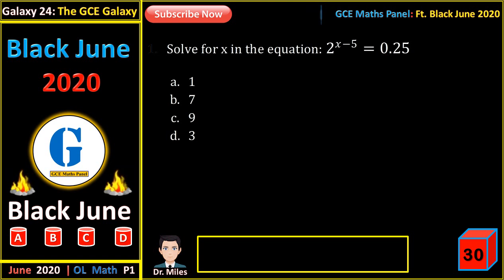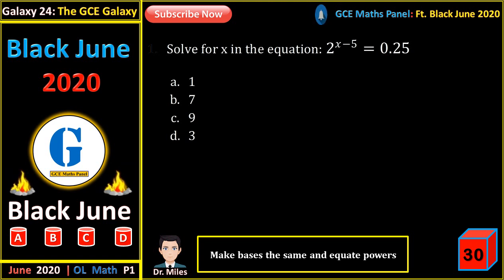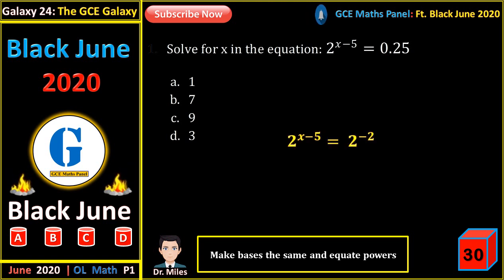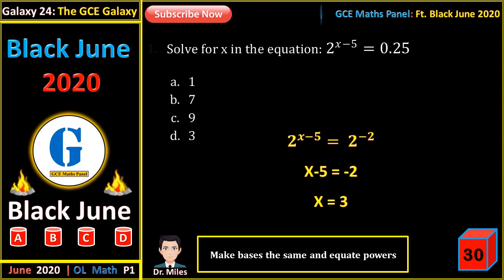Solve for x in that equation. The key is to make the bases the same, since the unknown exists as a power. 0.25 is the same as 1 on 4, which is 1 on 2 to the power 2, the same as 2 to the power minus 2. Now the bases are the same. Equating powers gives x minus 5 equals minus 2, and x equals 3.